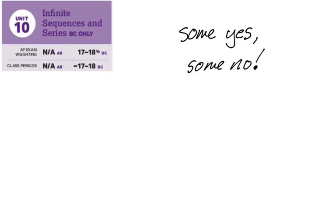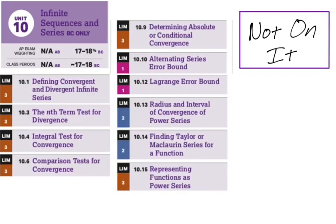All right. So unit 10 is a little more complicated. So that's infinite sequences and series. So some of it's on it and some of it is not on it. And I quintuple checked this. So I'm pretty sure I got this right as of the time that I'm making this. So the following things are not on it. These are not going to be on the exam. So defining convergent divergent series and term test, integral test, comparison tests. So basically like a lot of the series tests are just out.